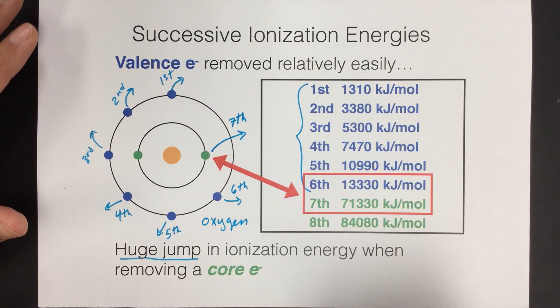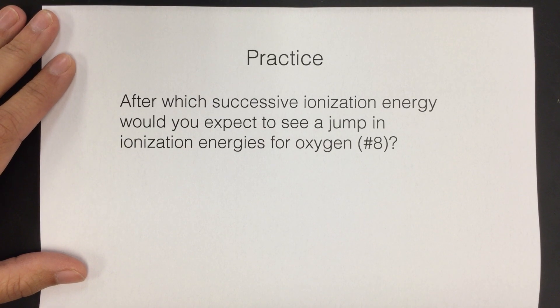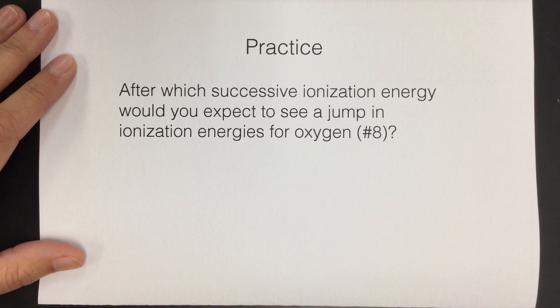And so there will be questions about where you will see those jumps depending on how many valence electrons there are. So this question, this first question, is about the diagram we just saw. After which successive ionization energy would we expect to see a jump in ionization energies for oxygen?